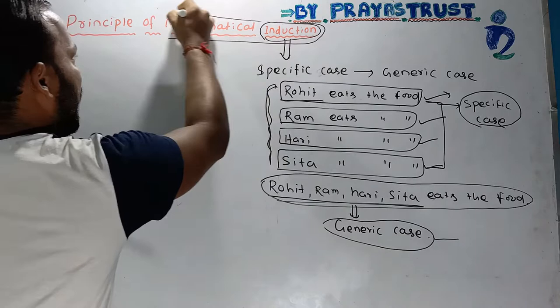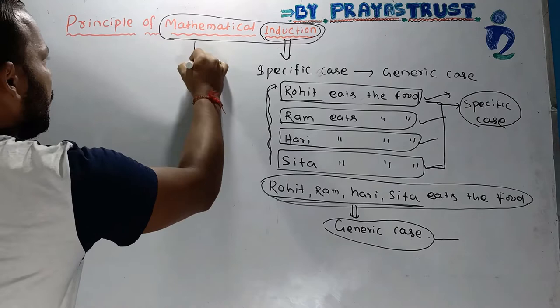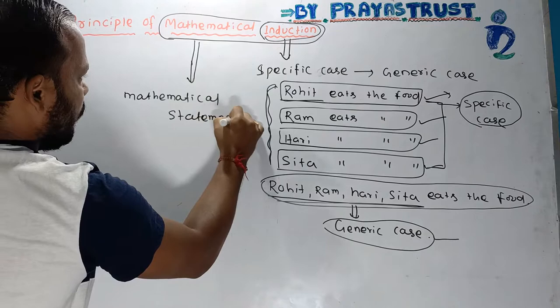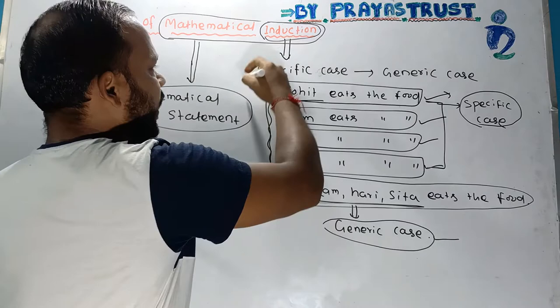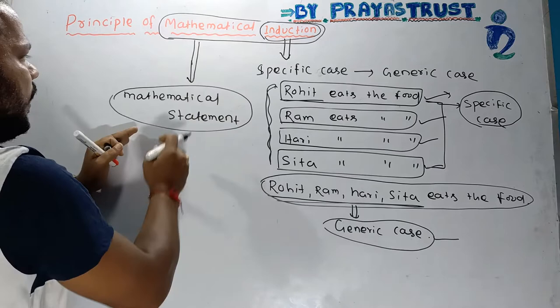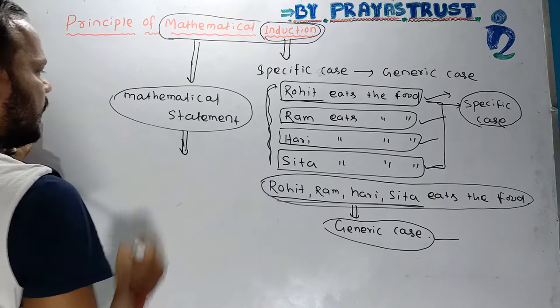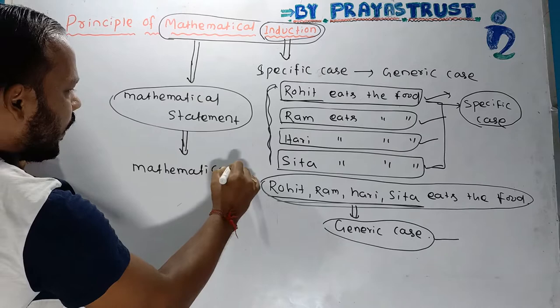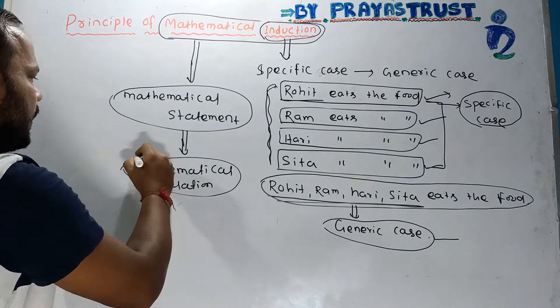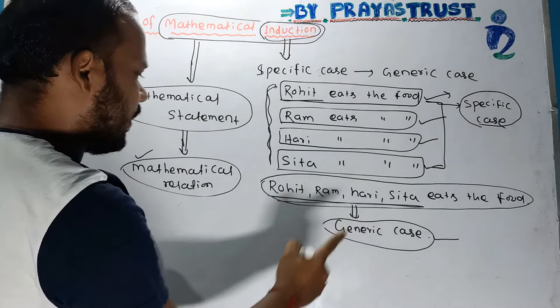Now, what is mathematical induction? Mathematical induction is related to mathematical statements. We deal with generic statements but now relate them to mathematical relationships. A mathematical statement is given, and you find the relationship and prove both sides — left hand side and right hand side.